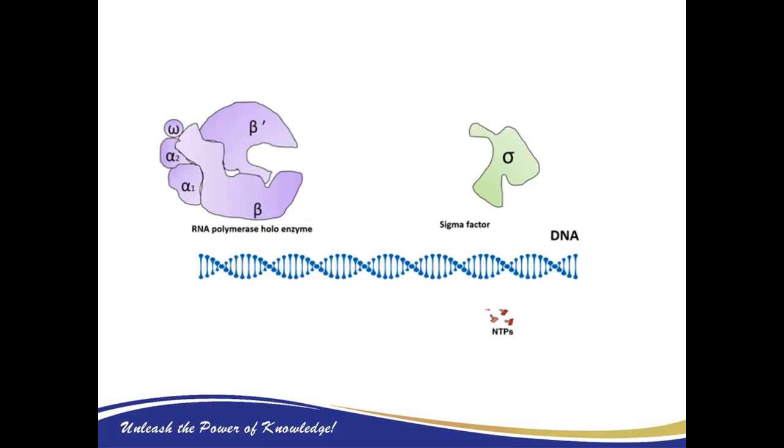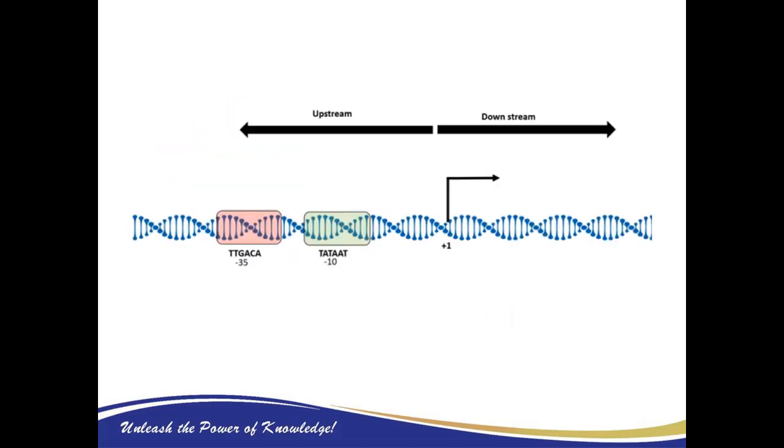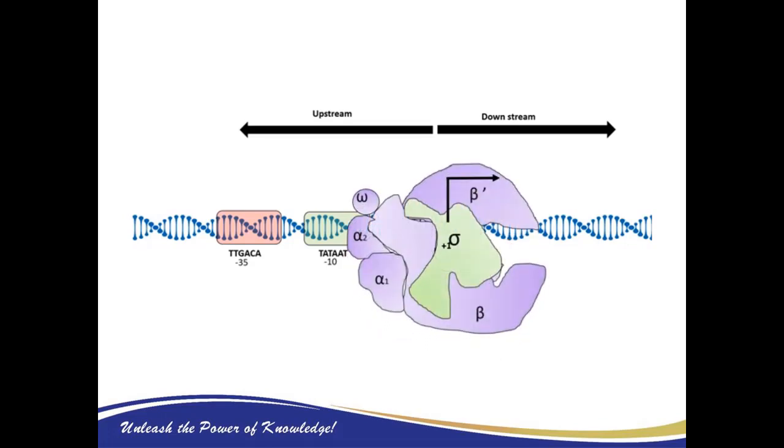In initiation, the key players are the DNA that needs to be transcribed, the RNA polymerase, and the sigma factor. The RNA polymerase and sigma factor form the RNA polymerase holoenzyme, along with nucleotide triphosphates which are used to synthesize nascent mRNA. Just before the transcription start site, the nomenclature uses minus to denote the upstream region and plus to denote the downstream region. At 10 base pairs upstream and 35 base pairs upstream, there are well-conserved consensus sequences to which the prokaryotic polymerase can bind. This binding and promoter finding is aided by the sigma factor.